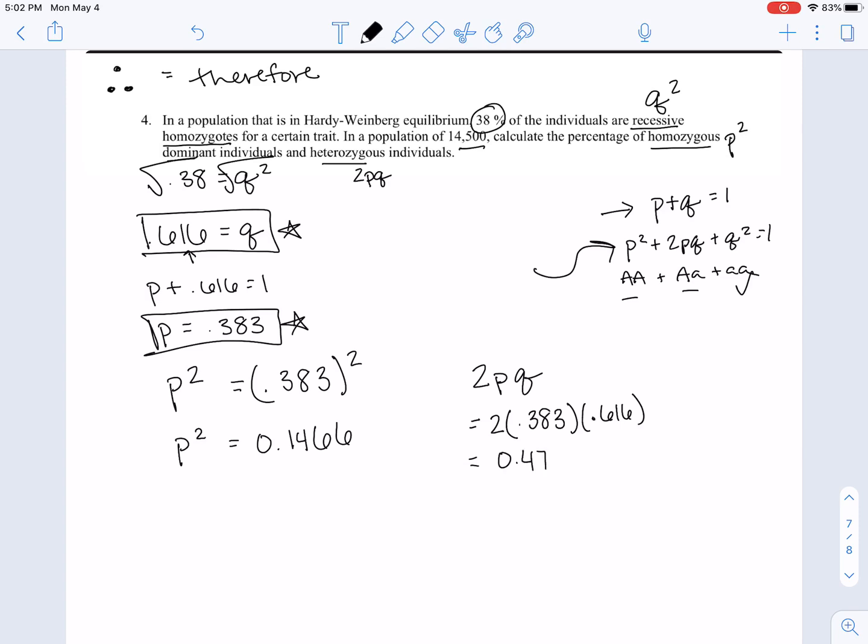So we know that these are the percentages that we just found. So if you want to double check, remember that the question gave us Q squared and Q squared is equal to 0.38. So I'm just going to add all of those together because they should equal one, right? So I'm just going to double check my work here because sometimes I make mistakes too. Yeah. That's 0.999 repeating. So just rounding errors. So these are our frequencies.